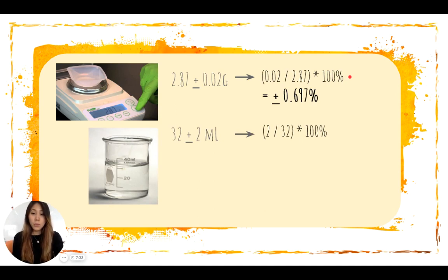32 milliliters plus or minus 2 milliliters of uncertainty, we can get the relative uncertainty of plus or minus 6.25%. Now we have 2 different relative uncertainty values. We can add these percentages together.